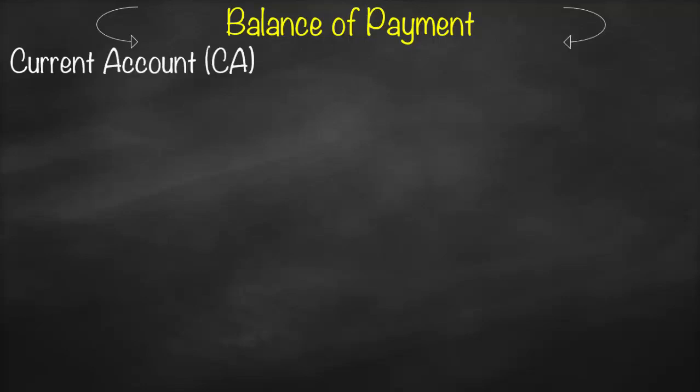Balance of payments includes several accounts: current account, and capital and financial account. Some textbooks combine capital and financial accounts together; in this example I will do the same. So every time I use the word 'capital account,' I'm referring to both capital and financial. Rather than having you memorize items under each account, I will give you a simple criterion to easily differentiate between items under current account and capital account.